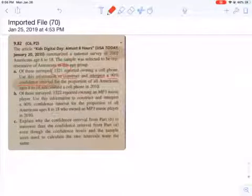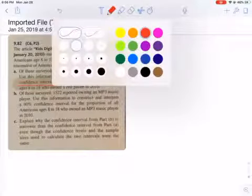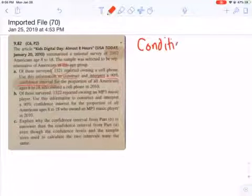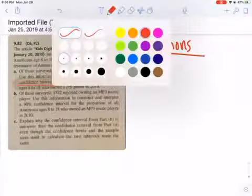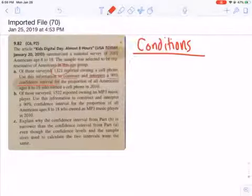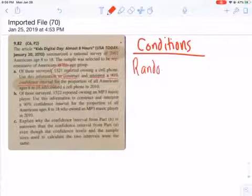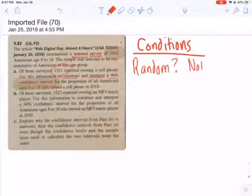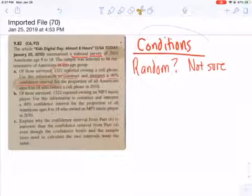First things first, before we even start doing this, we need to break down our conditions. Our first condition: random. Unfortunately, since it's a national survey, they say nothing about this being a random sample. So we can't really verify it, but we're going to go forward anyway. We're just going to say not sure.